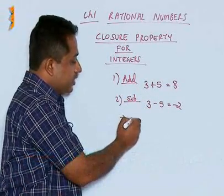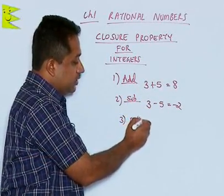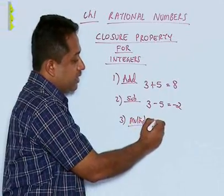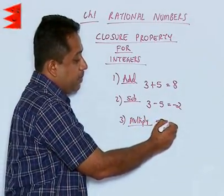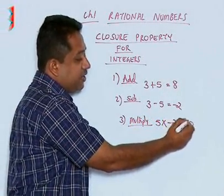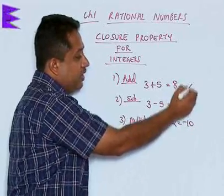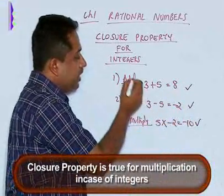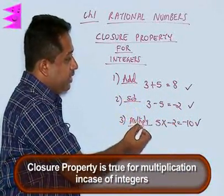What about multiplication? When we multiply two numbers which are integers, let us say 5 multiplied by minus 2, the result is again an integer. So, we find that the closure property holds good in case of addition, subtraction, and multiplication.